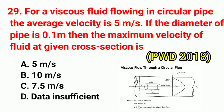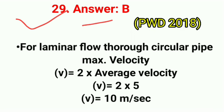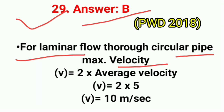Question No. 29. For a viscous fluid flowing in a circular pipe, the average velocity is 5 m/s. If the diameter of pipe is 0.1 m, then maximum velocity of fluid at a given cross section is? Correct answer is option B: 10 m/s. For laminar flow through a circular pipe, maximum velocity V = 2 × average velocity. So V = 2 × 5 = 10 m/s.